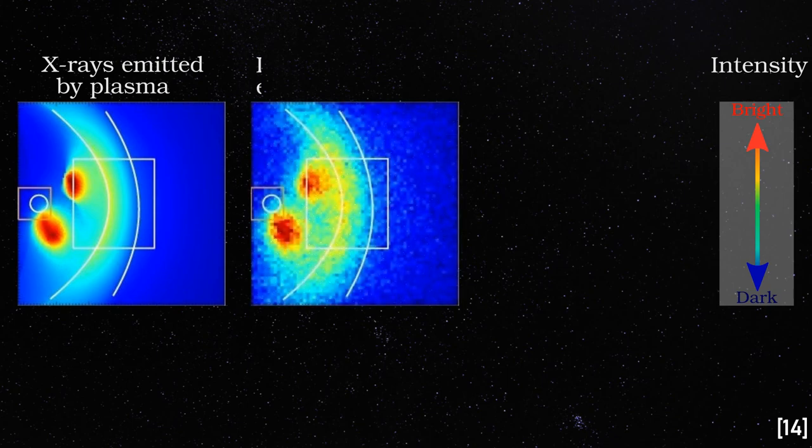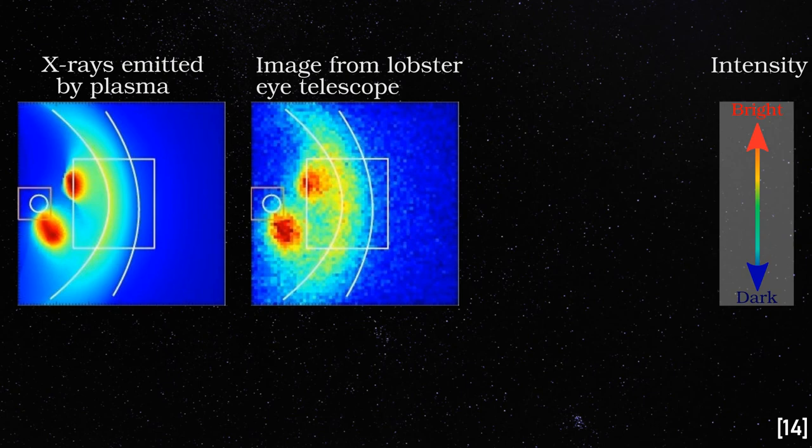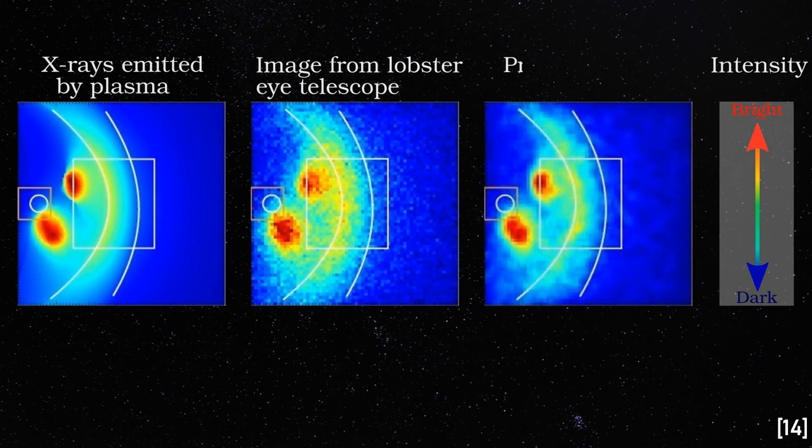Once those X-rays get focused by the lobster eye, and each point source creates this kind of cross which I showed before, the detector will record something like the image in the middle. Grainy, but very reasonable. Electronic processing techniques can then reconstruct the image on the right, which is a good representation of reality.